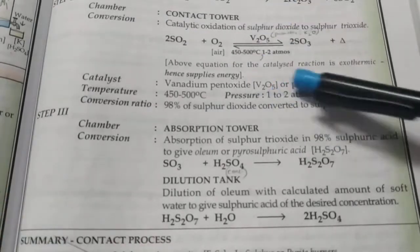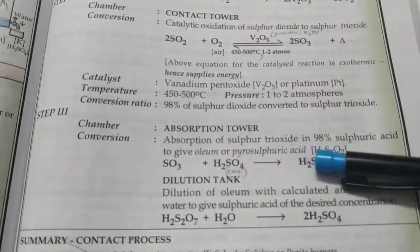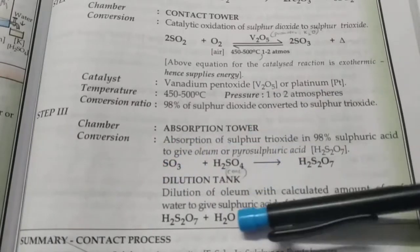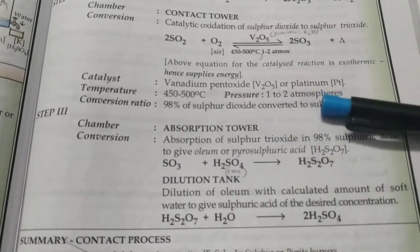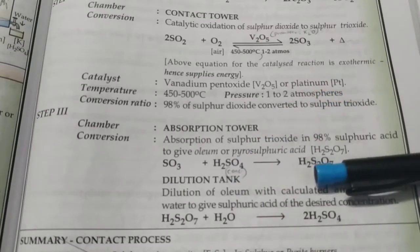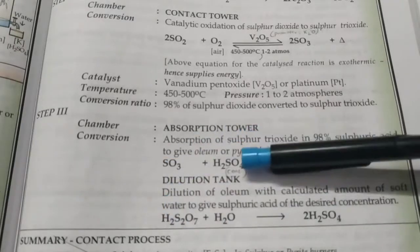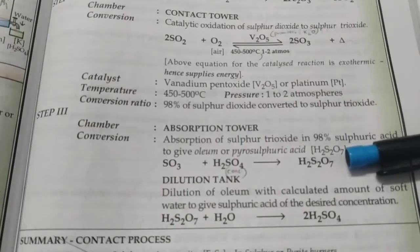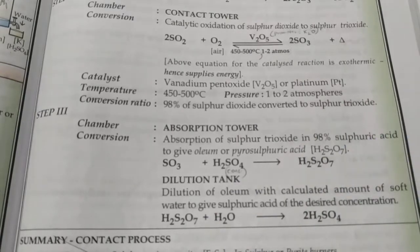The next step is the absorption tower. This sulfur trioxide should be dissolved to get sulfuric acid, but don't try to directly dissolve it in water because you will get a mist of sulfuric acid which is very difficult to condense and very corrosive. It's better to first dissolve it in conc sulfuric acid to get pyrosulfuric acid also called oleum, and then when we dissolve it in water we get sulfuric acid of the desired concentration.